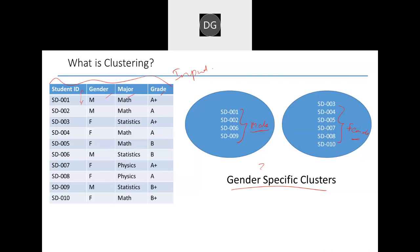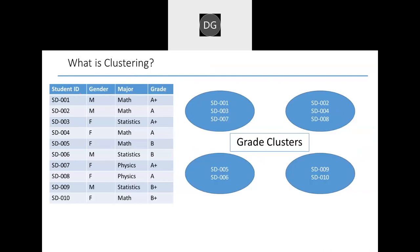If I split based on grade, I can split into four different categories. Students 1, 3, and 7 got an A+ grade. Students 2, 4, and 8 got an A grade. And some are having B+.